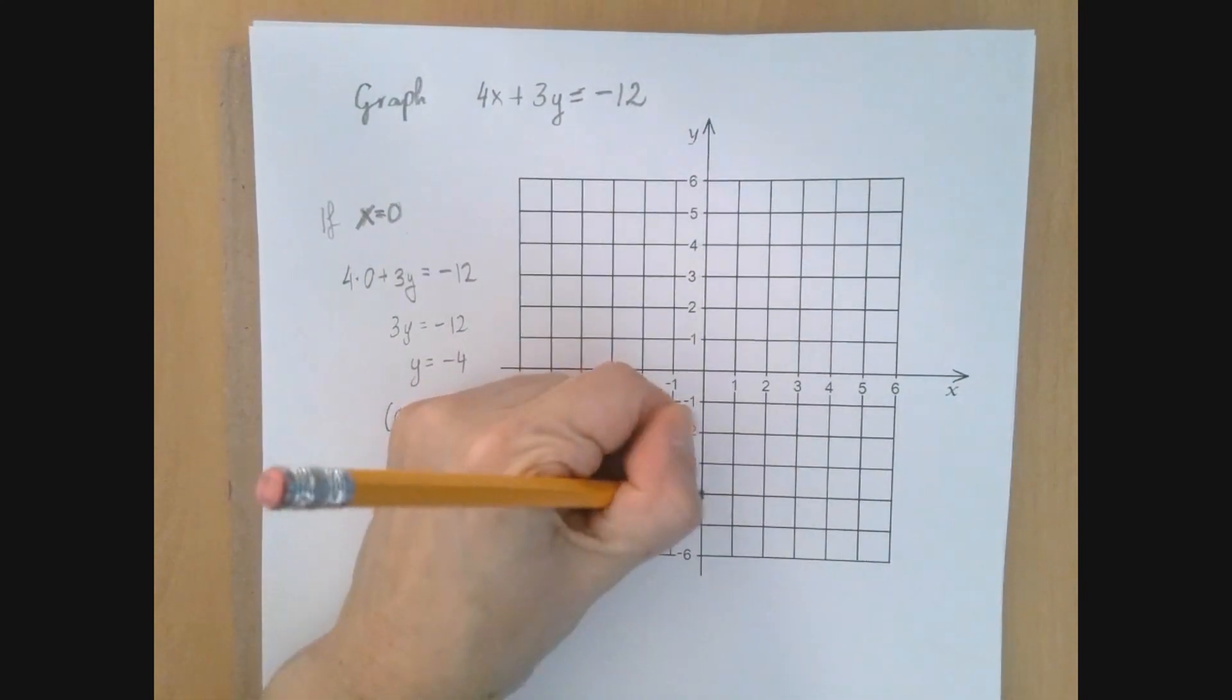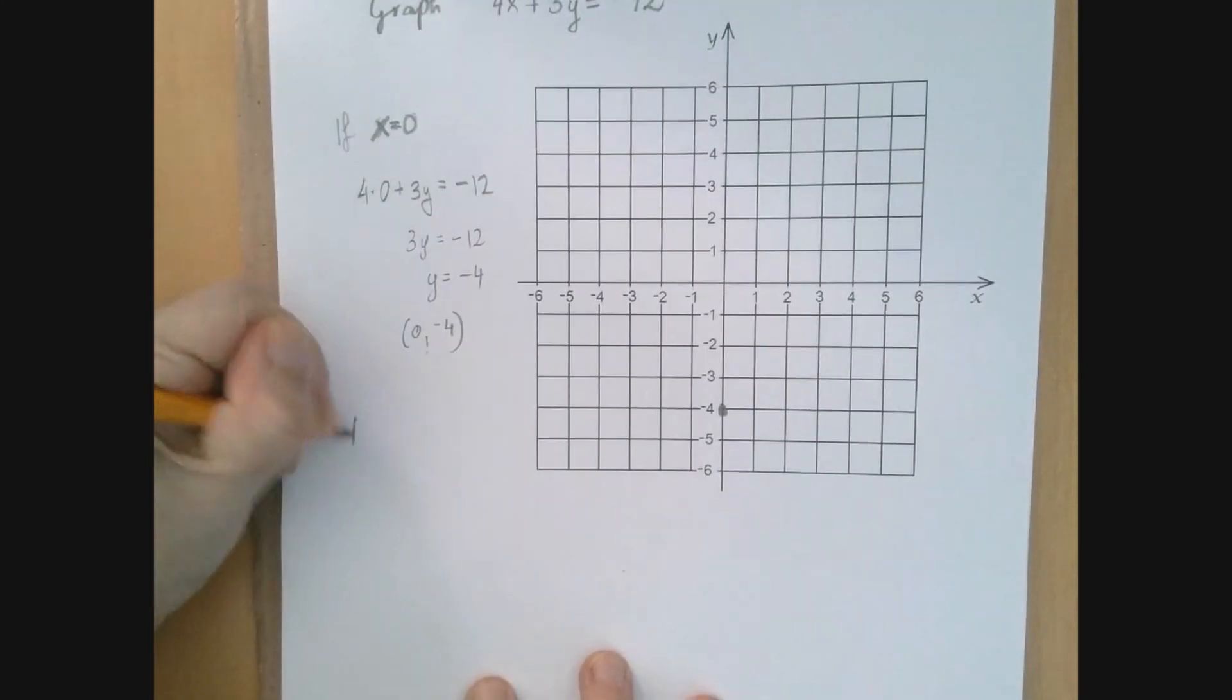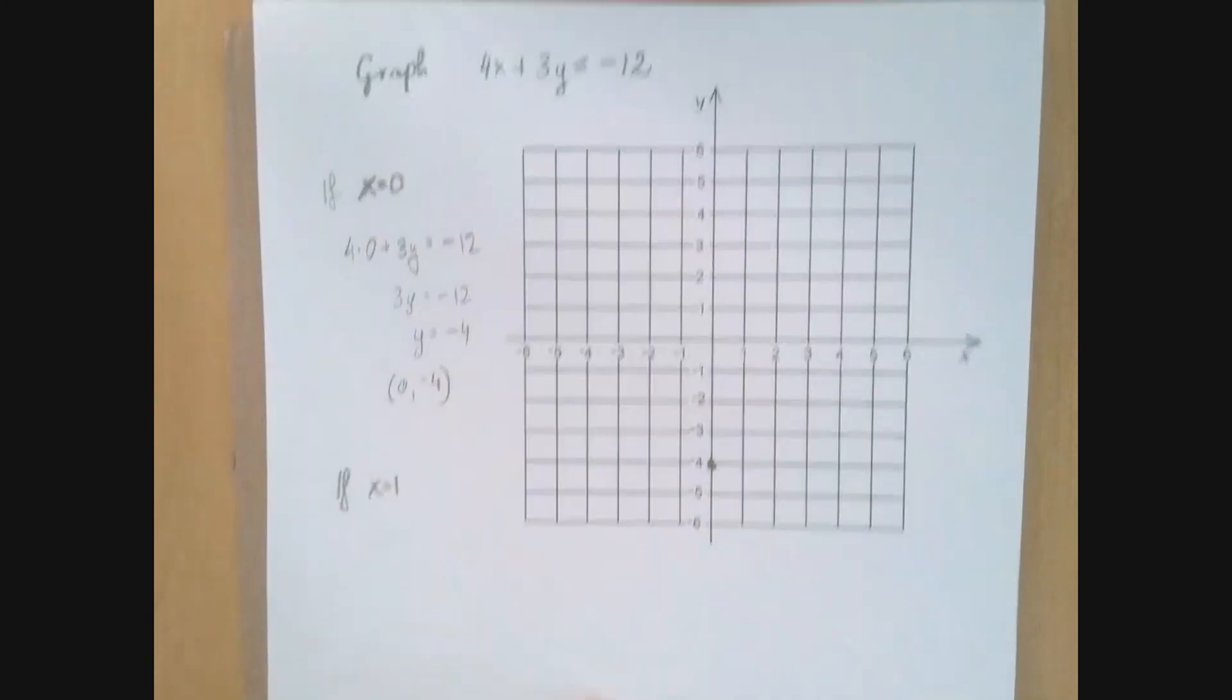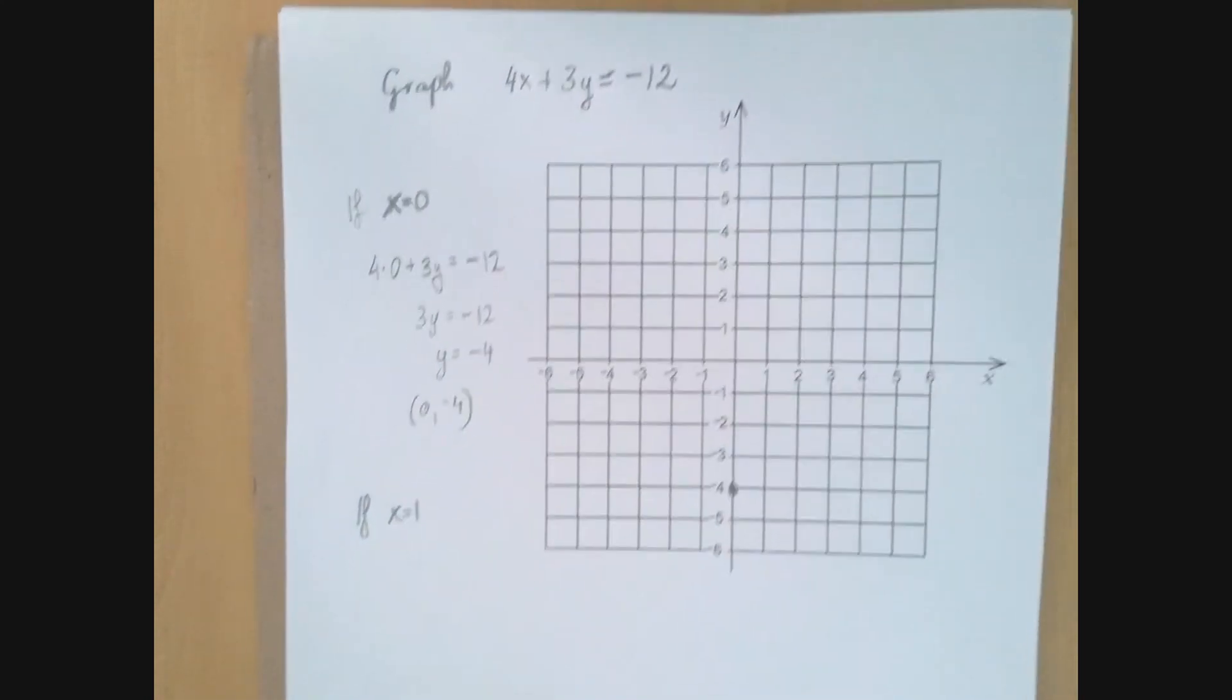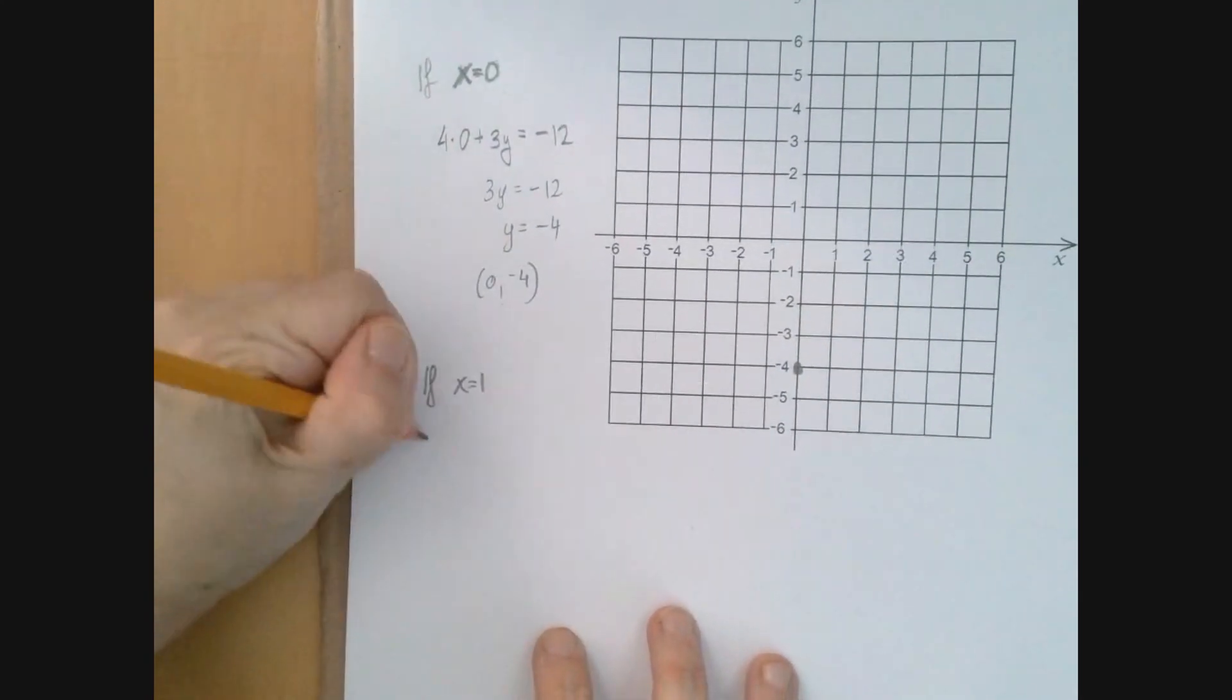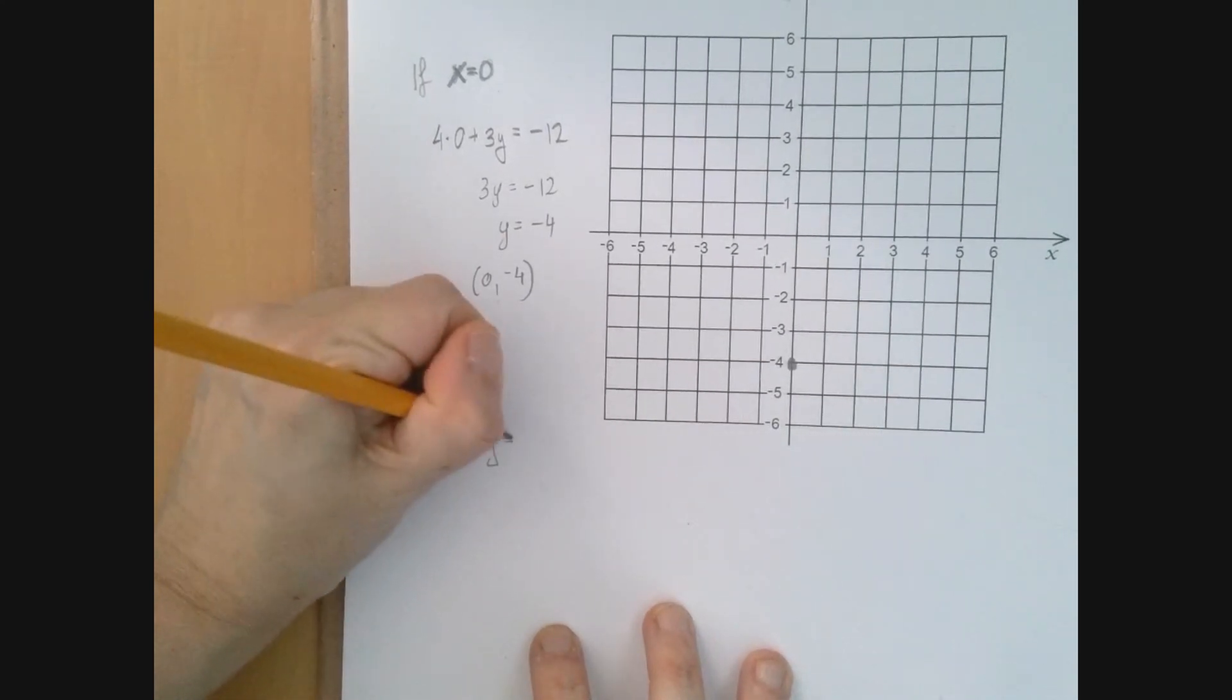Okay, we can graph that. There it is. Now let's see what happens if x equals 1. If x equals 1, the equation is 4x plus 3y equals negative 12. So we're going to get 4 times 1 plus 3y equals negative 12.